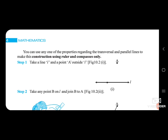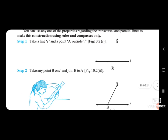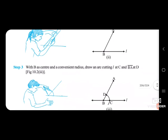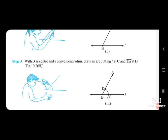Step 1: Take a line L and a point A outside it. Take any point B on L. Step 2: Join B to A. With B as center and a convenient radius, draw an arc cutting L at C and line BA at D.